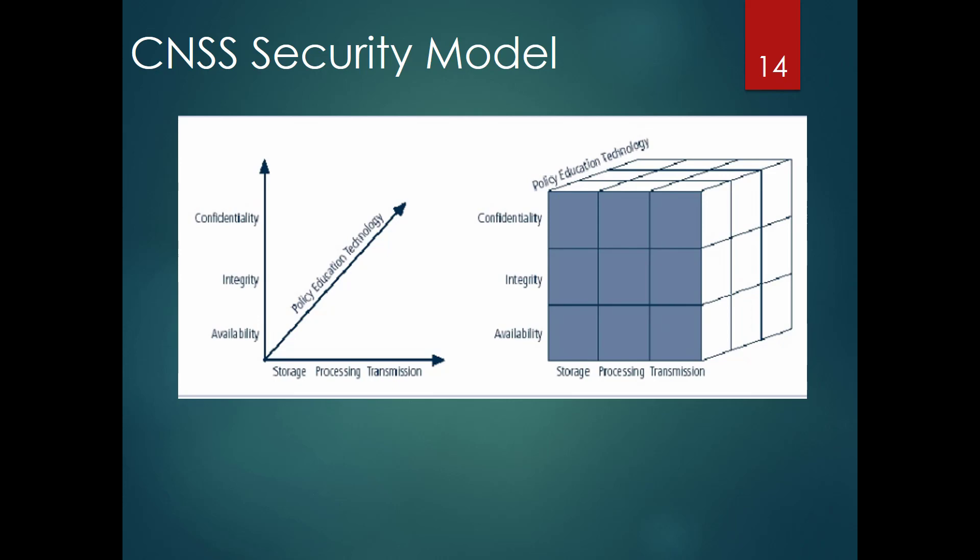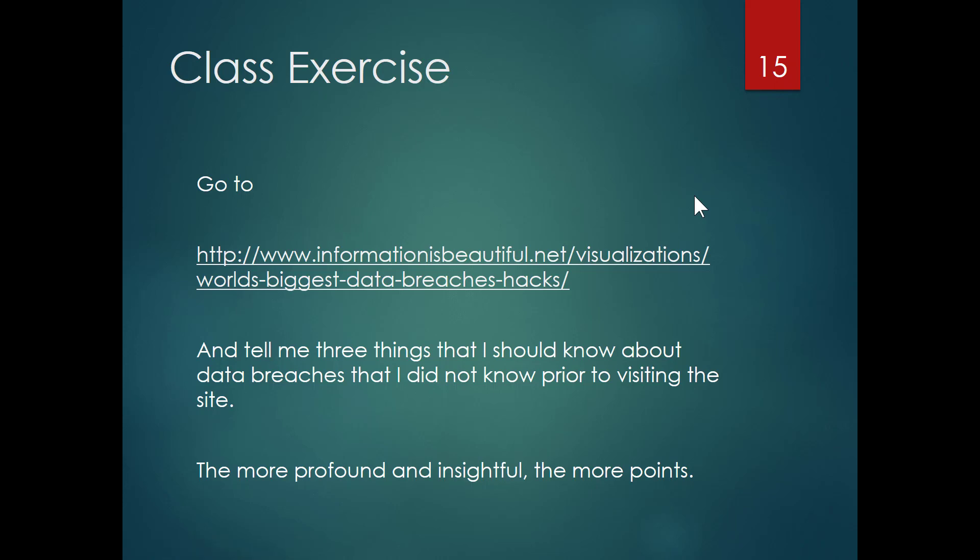So I've talked about attacks and the underlying model of confidentiality, integrity, availability, and accountability; of storage, processing, and transmitting; and of policy, education, and technology as the three tools — this is the McCumber Cube. Now we're going to do an in-class exercise. I want you to go to http://www.informationisbeautiful.net, navigate to their visualizations folder, and look at the 'World's Biggest Data Breaches / Hacks.' Email me three things you learned about data breaches by visiting that site and looking at the different types of attacks and hacks.